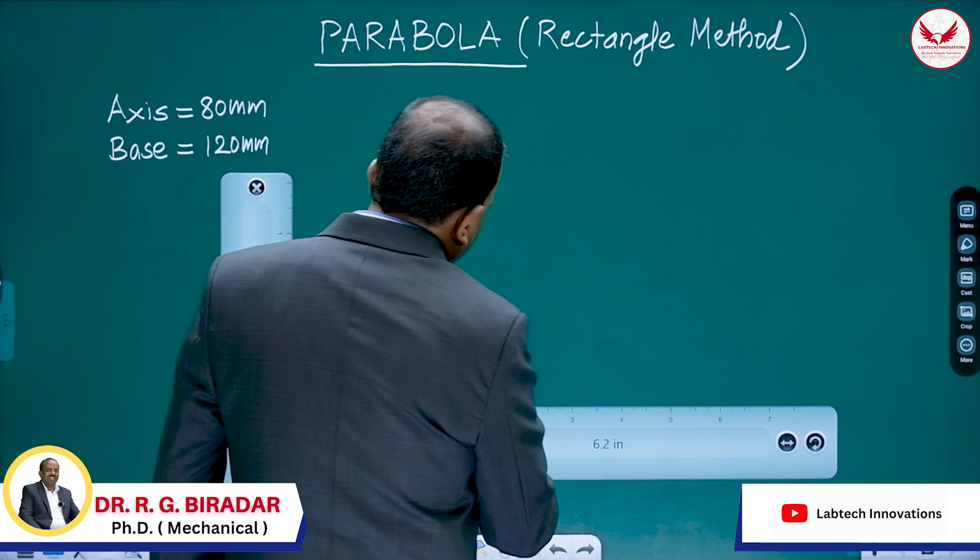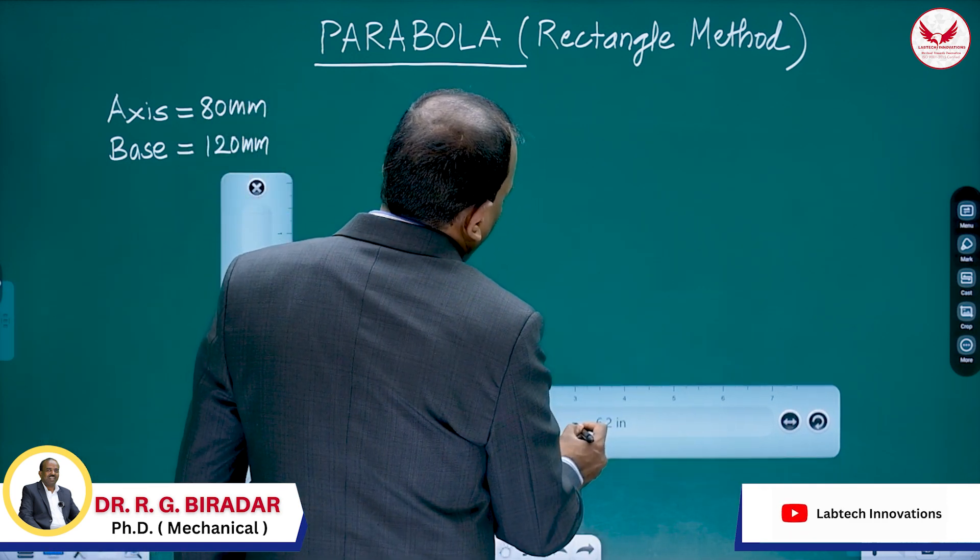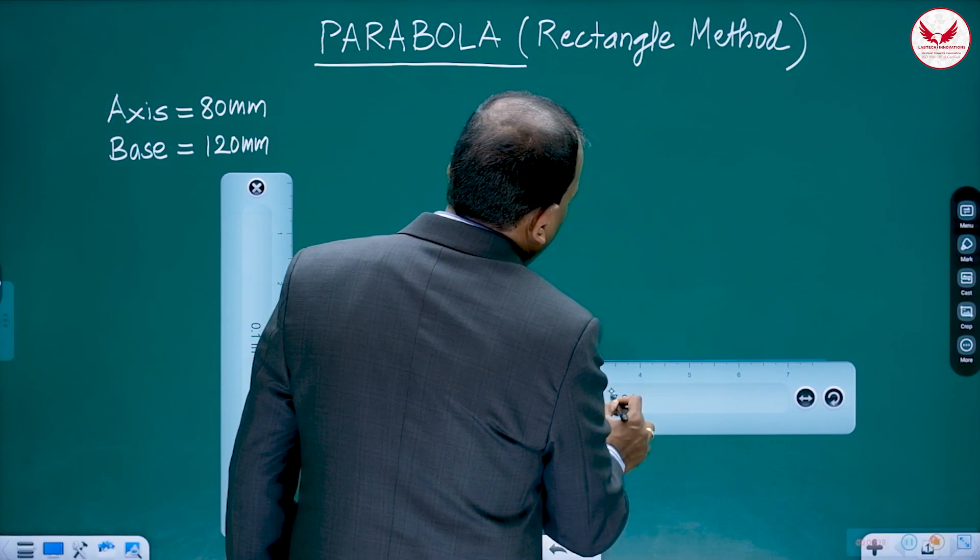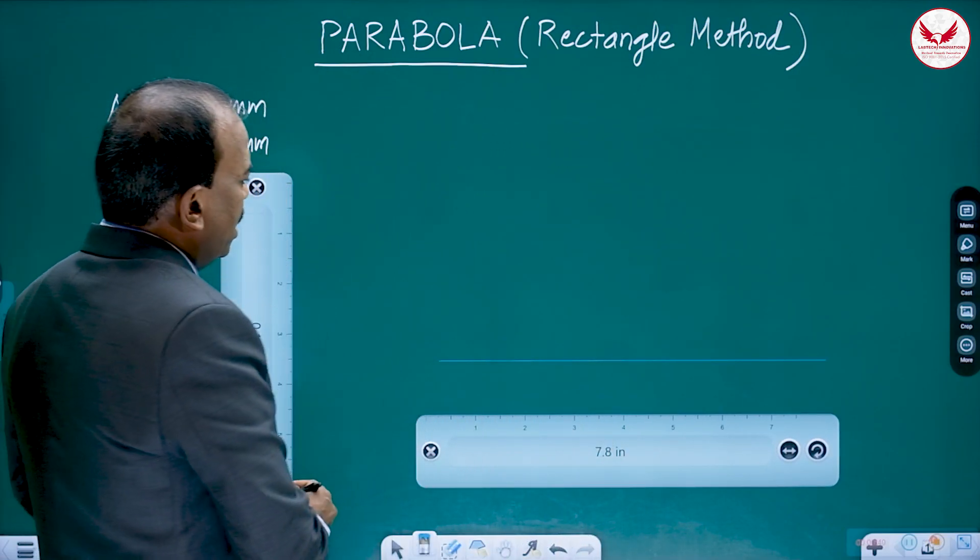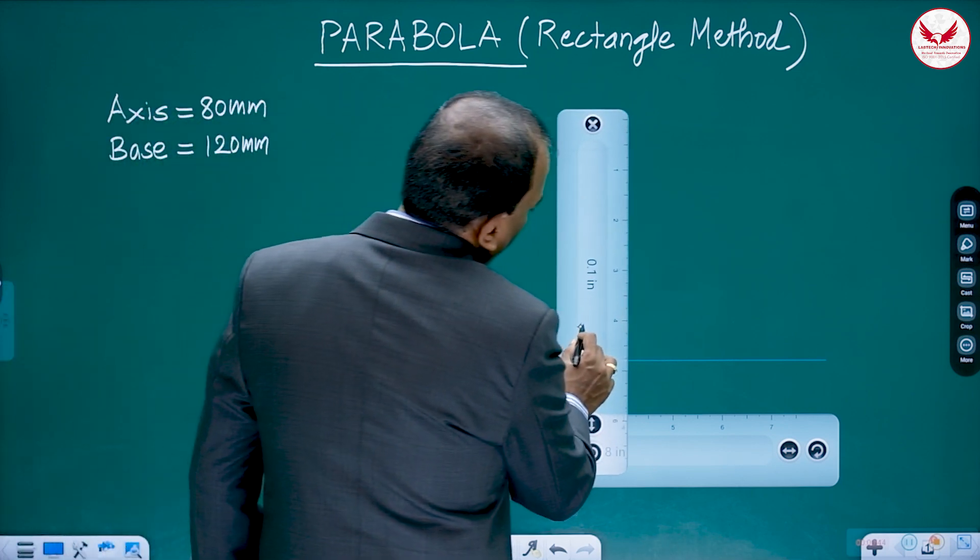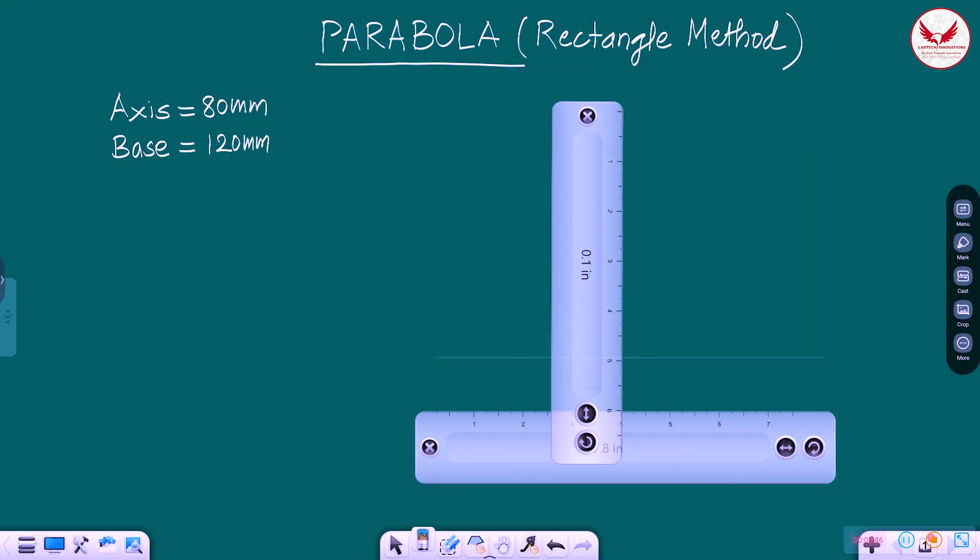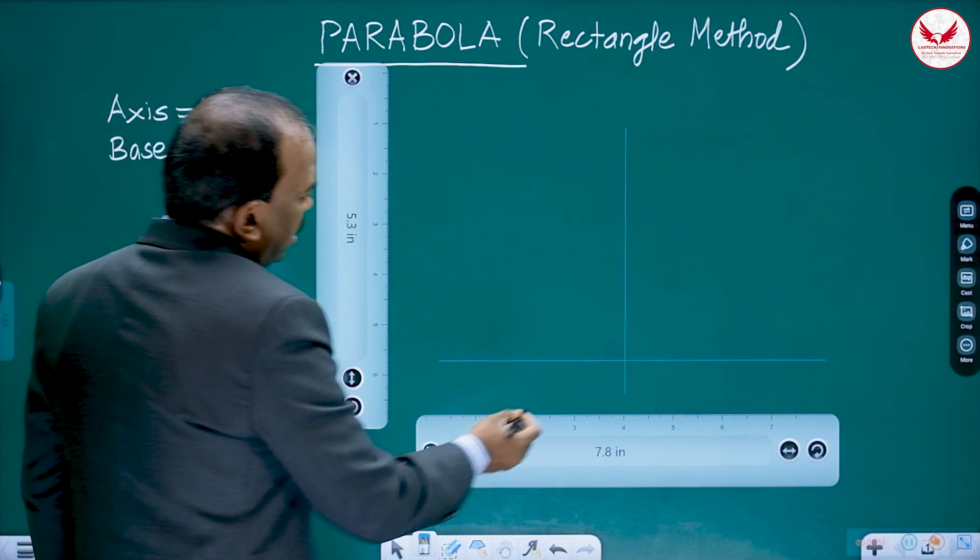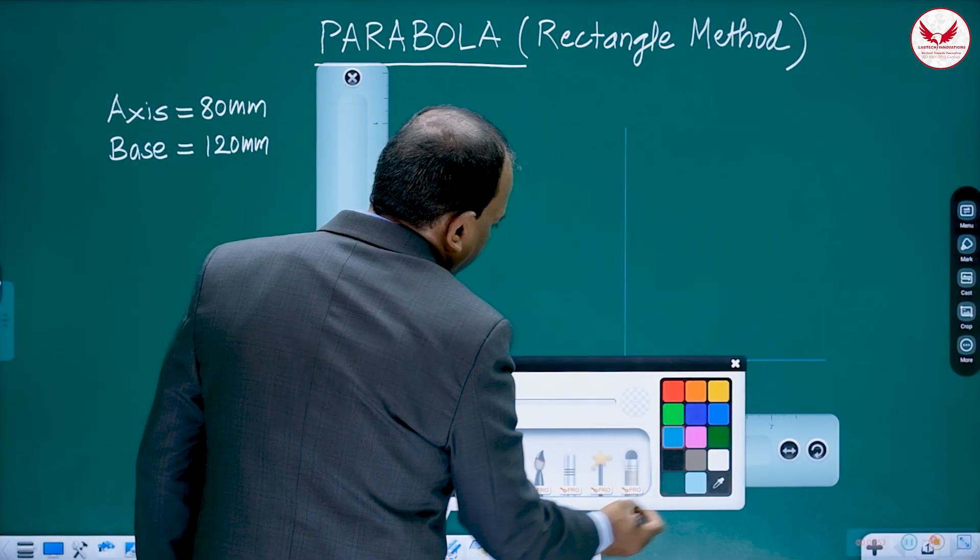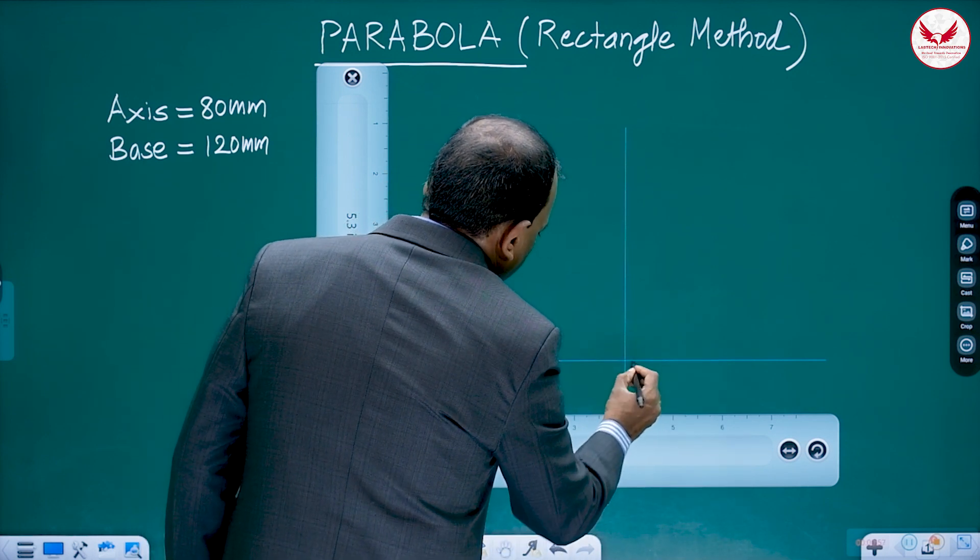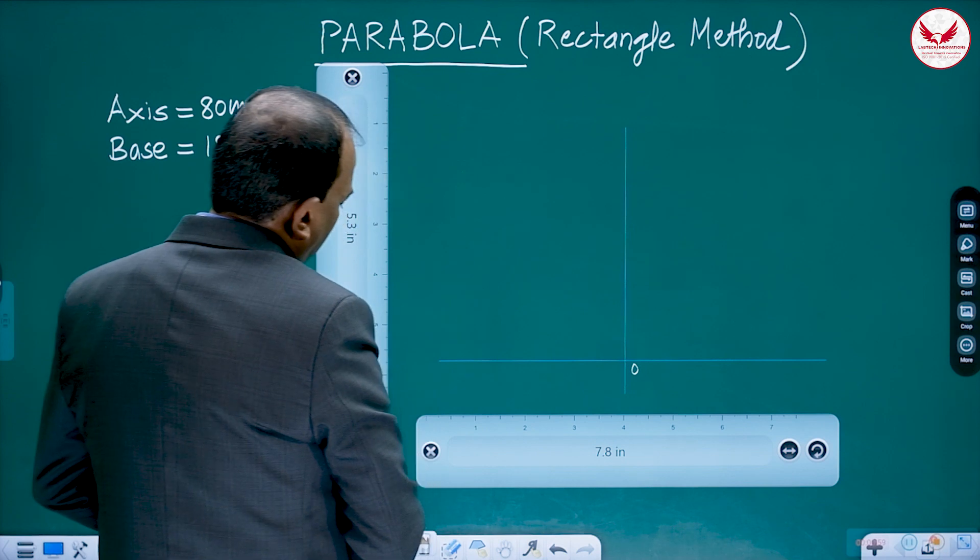Anyway base is there. For the base, on lower side, base is going to be on lower side. Draw a light horizontal line. Then similarly, one vertical line, you draw randomly, without thinking. And this intersection is going to be O.